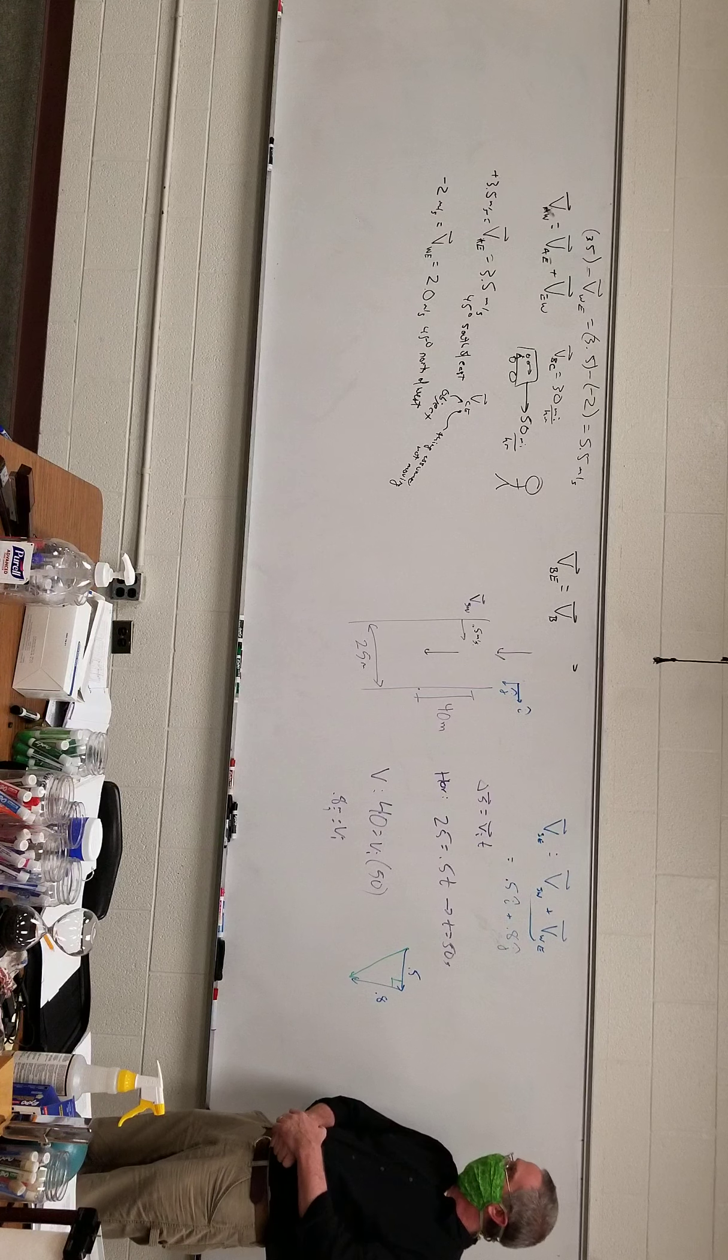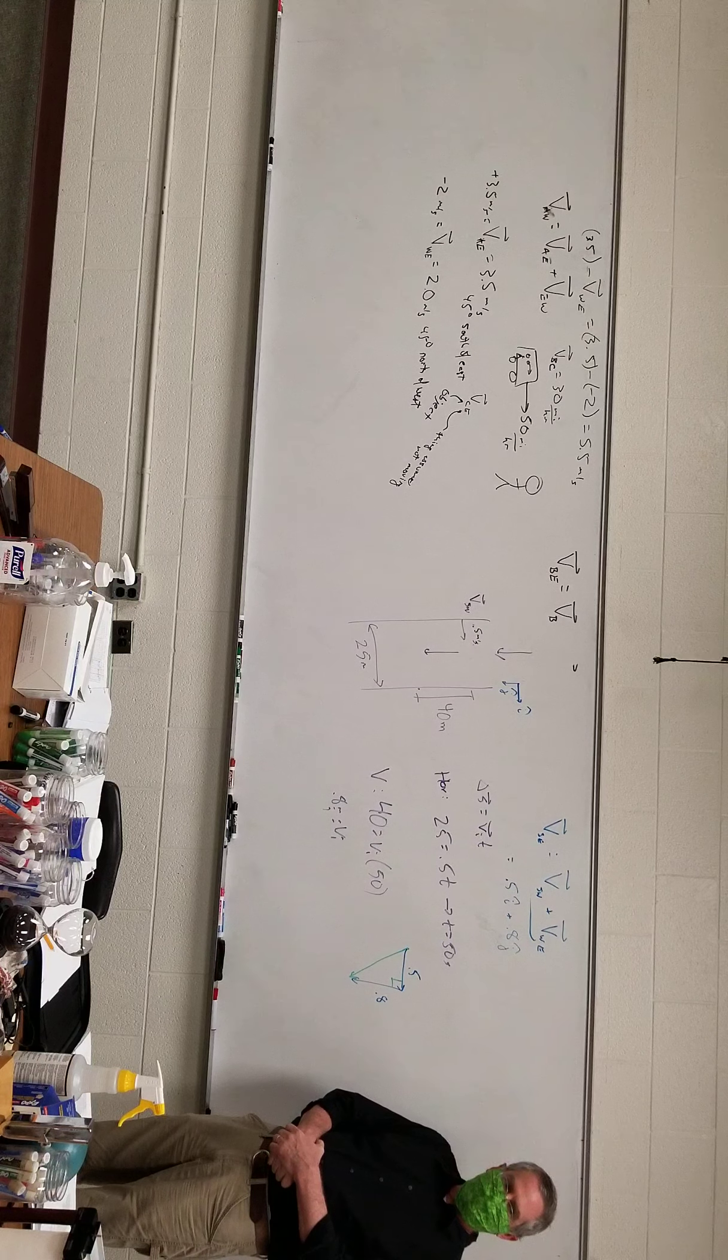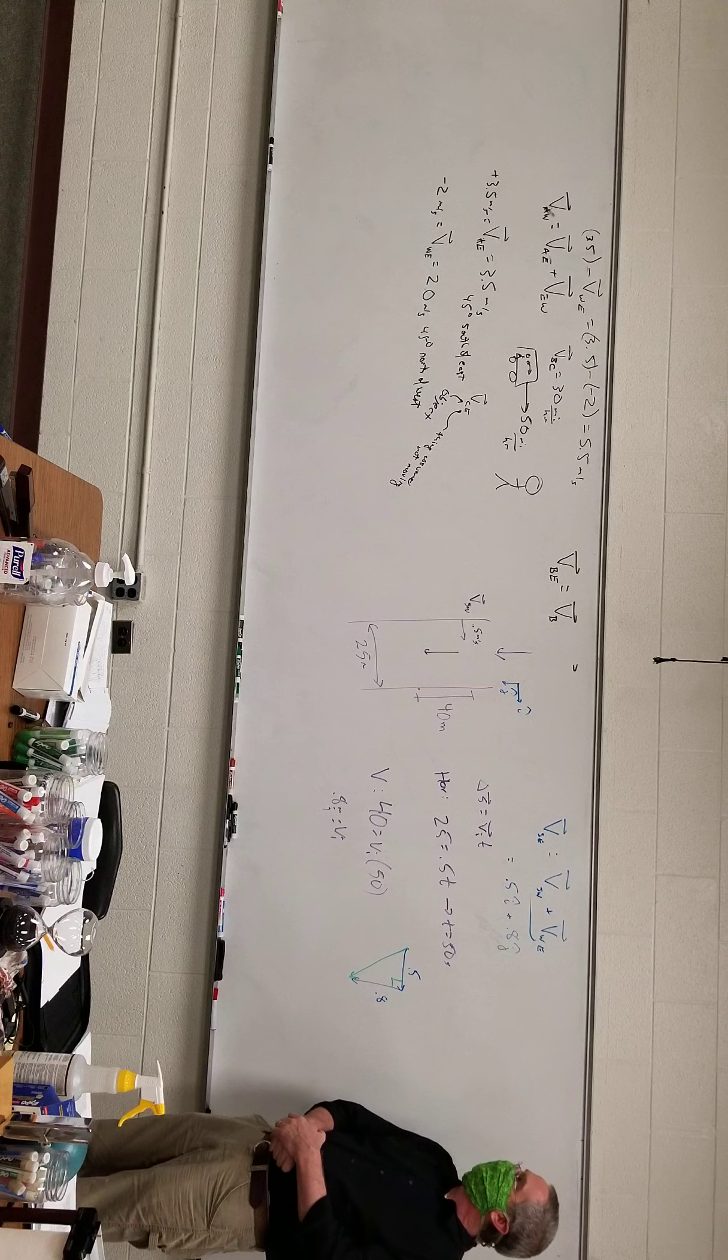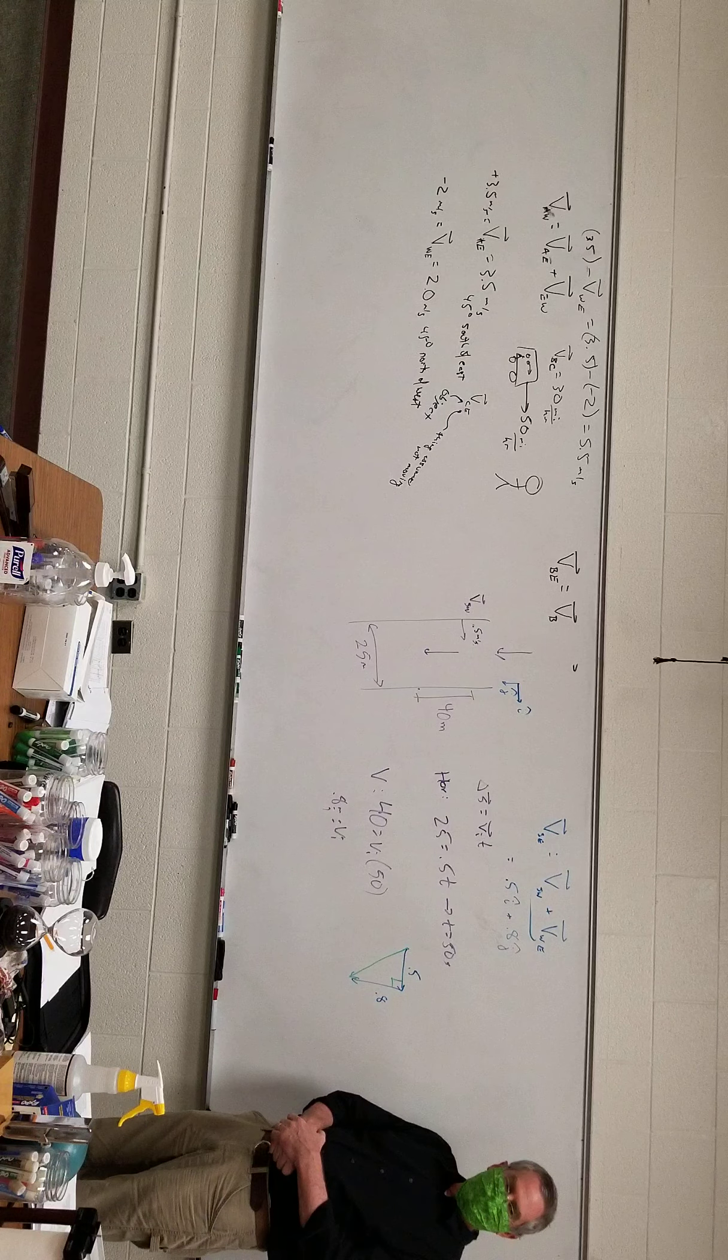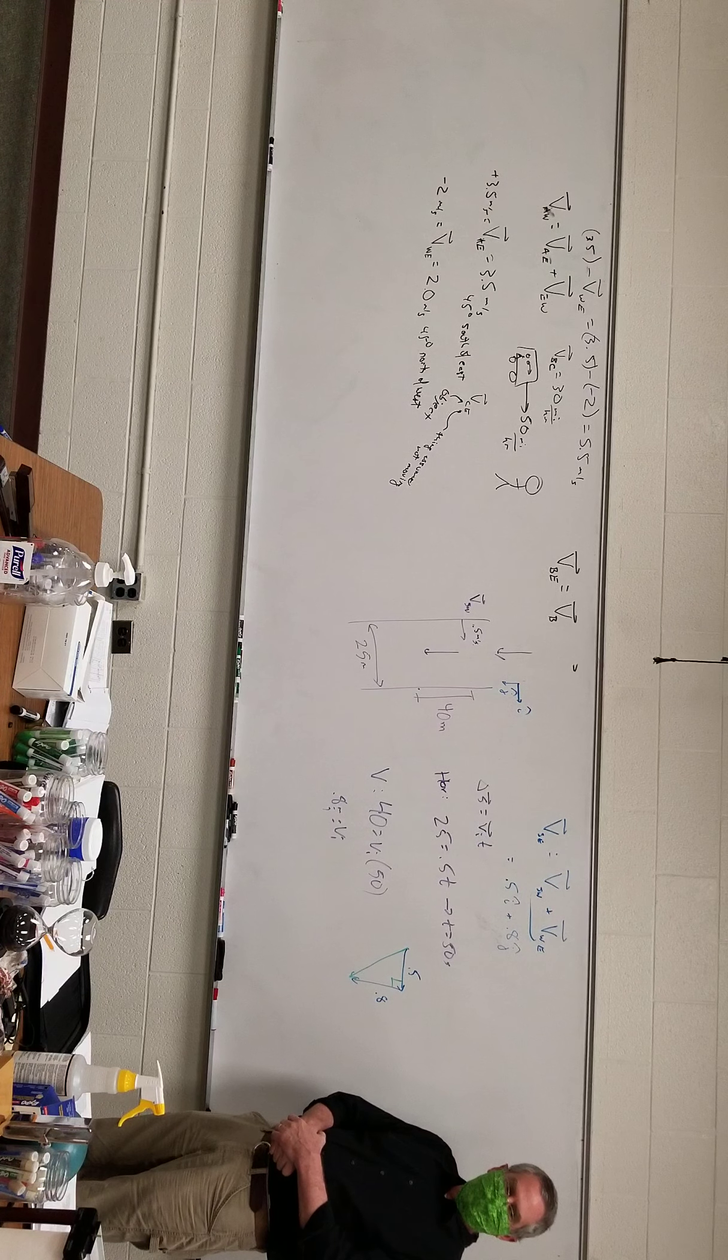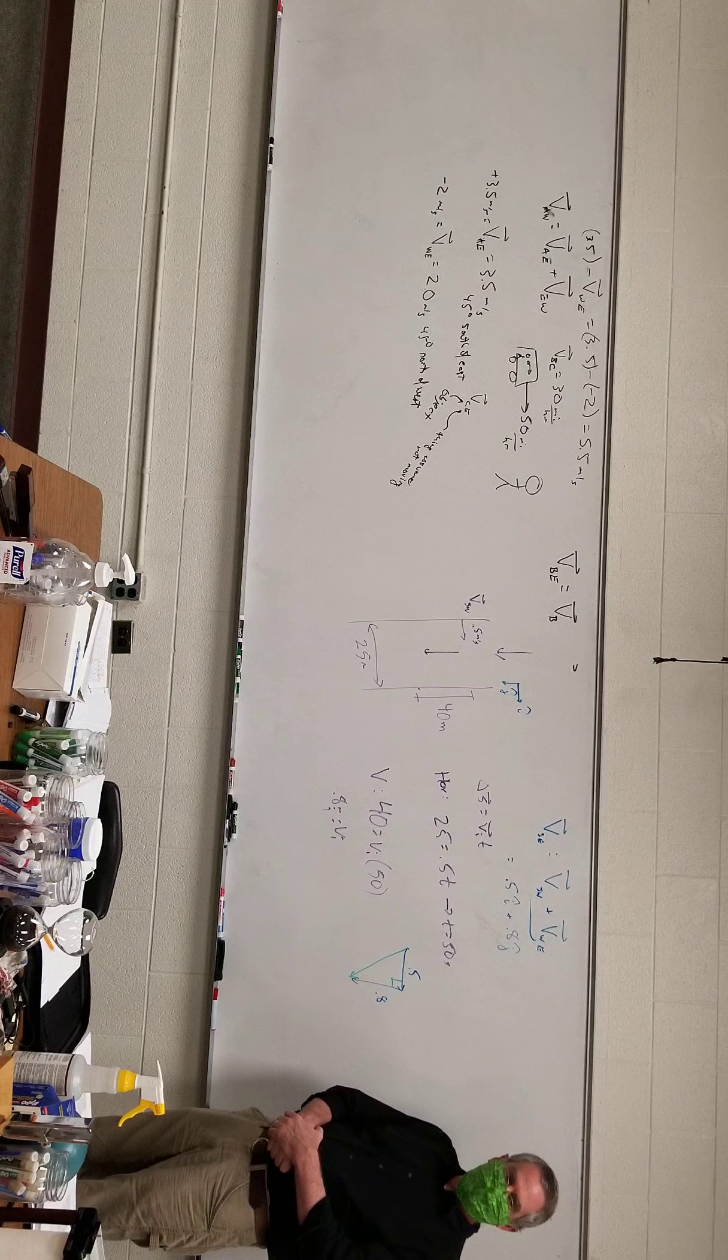Well, what I'm not understanding is where you got the, is that Galilean relativity where it says vector se is equal to vector of the swimmer in relation to the water and the vector of the water in relation to the earth? Is that Galilean relativity? That is Galilean relativity, okay.